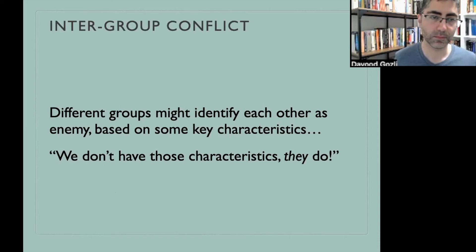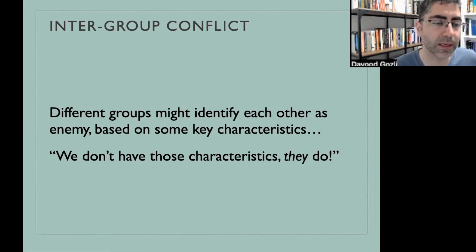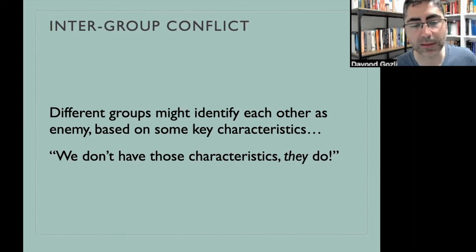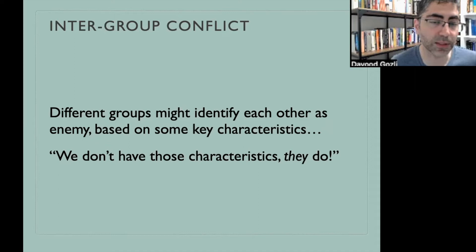There's intergroup conflict whenever we have different cultures. There might be negative feelings towards people who are different. Different groups might identify each other as enemy based on some key characteristics — usually an arbitrary feature like skin color, some physical feature, or a stereotype. Usually the thinking is: we don't have those characteristics of the other side, they do. The other group is perceived to be simpler — we think they're all the same — while our own group is seen as heterogeneous and diverse. That's a simplistic, prejudicial way of thinking about other cultures.